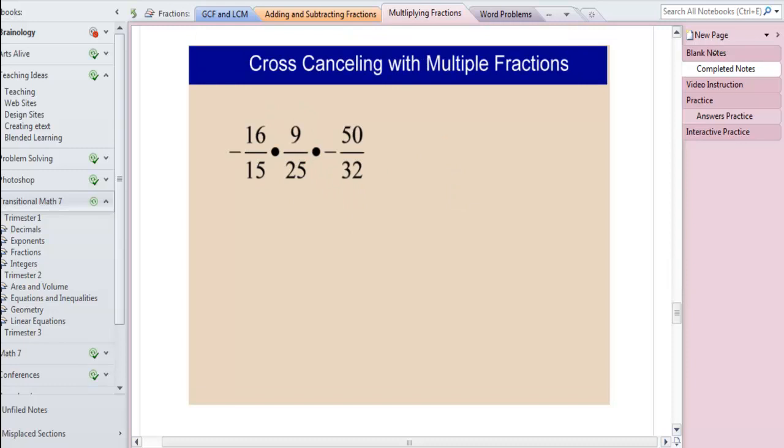So now I'd like you to try this next problem. Be sure to cross-cancel everywhere you can. After cross-canceling, I end up with 1 times 3 times 1 in the numerator which gives me 3. And 5 times 1 times 1 in the denominator which gives me 5. I have an even number of negatives, therefore my answer is positive.